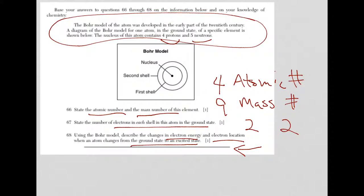Okay, so what happens to electron energy going from the ground state to the excited state? Well, electrons will move out from the nucleus, going from the ground state to the excited state. So the electron energy increases. Sorry for the handwriting.